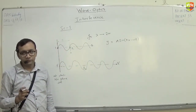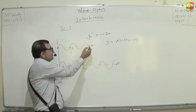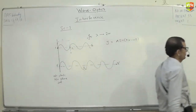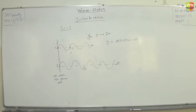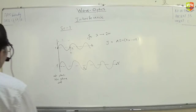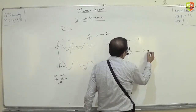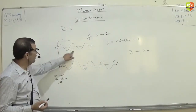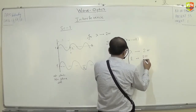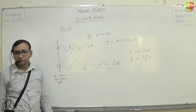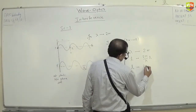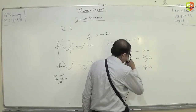Now, can you find the phase difference between point 2 and point 2-dash? Every lambda gives 2π of phase difference. So L1 distance will give a phase difference of 2π/λ × L1, and L2 distance will give 2π/λ × L2. The phase difference between 2 and 2-dash is then 2π/λ × (L2 − L1).